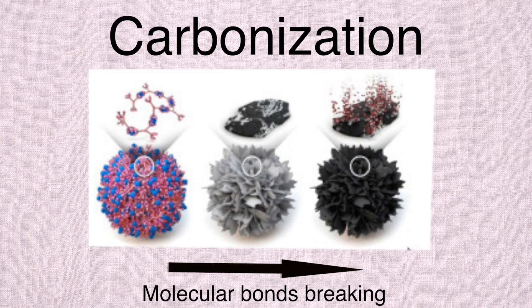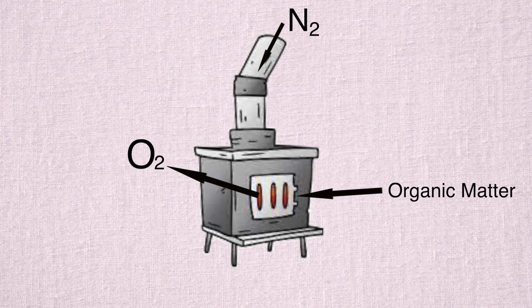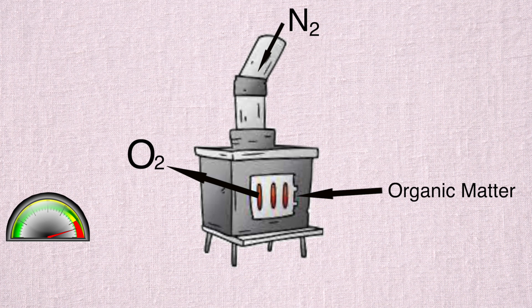Then, the organic matter must be broken down at the molecular level to rid it of hydrogen and oxygen. This can be done through the process of carbonization, where you put the organic material in a furnace while flowing nitrogen gas into it to purge the environment of oxygen in order to prevent combustion. The furnace will then be heated to roughly 700 degrees centigrade, which will break the molecular bonds of the organic material and the hydrogen and oxygen will be released as gaseous compounds.